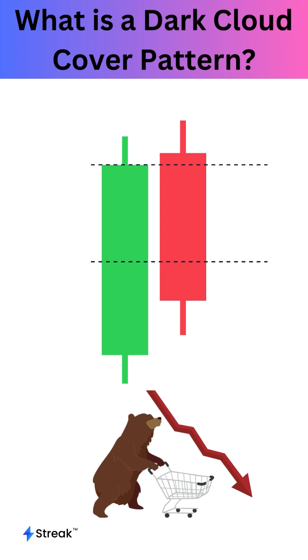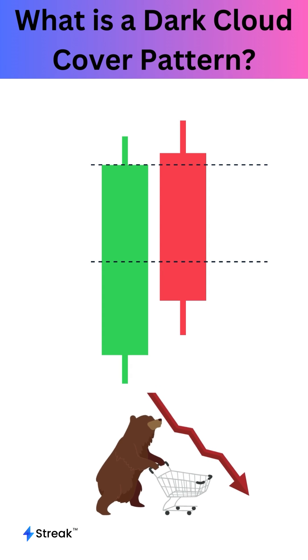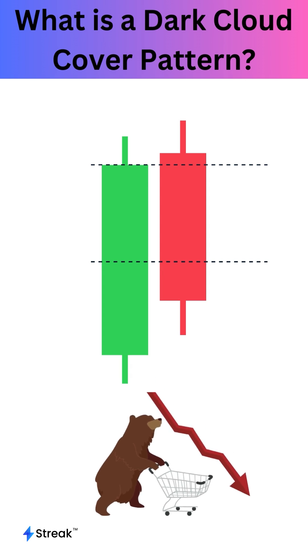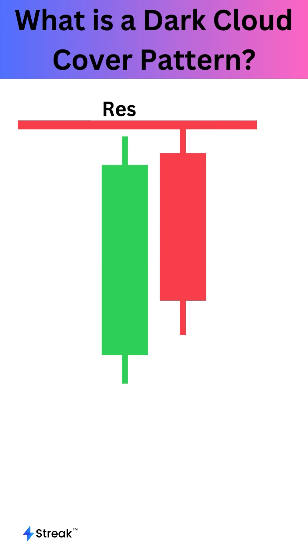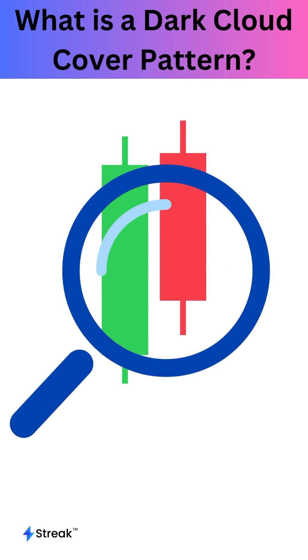This pattern suggests that the bears are gaining control and that the uptrend momentum is weakening. The pattern is more powerful if it is formed near a level of resistance after an uptrend.